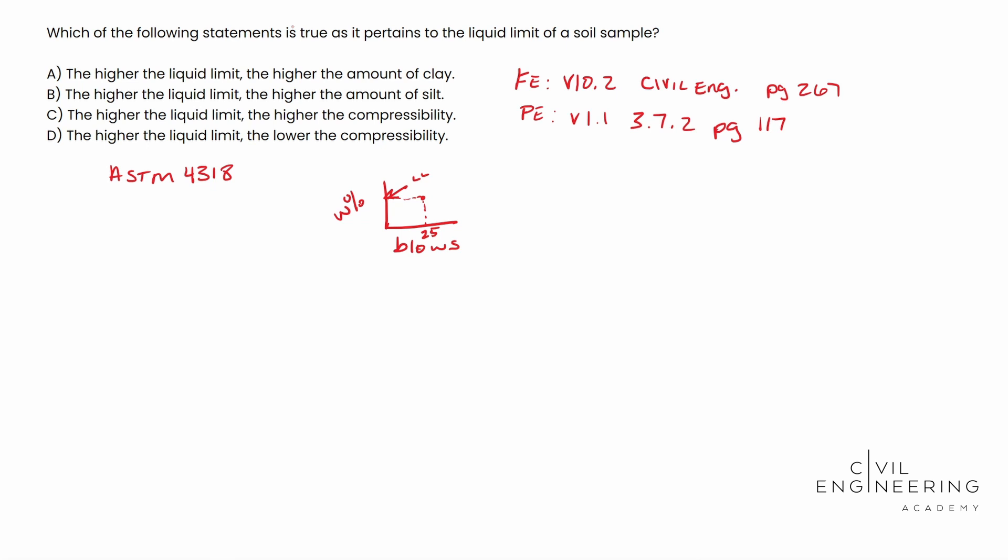Alright. And so with that said, let's think this through, right? Let's think about how this works. The higher the liquid limit, the more water it takes to act like a liquid, right? So imagine it, the higher the liquid limit, the more the moisture content needs to be at 25 blows. That's where it comes from.